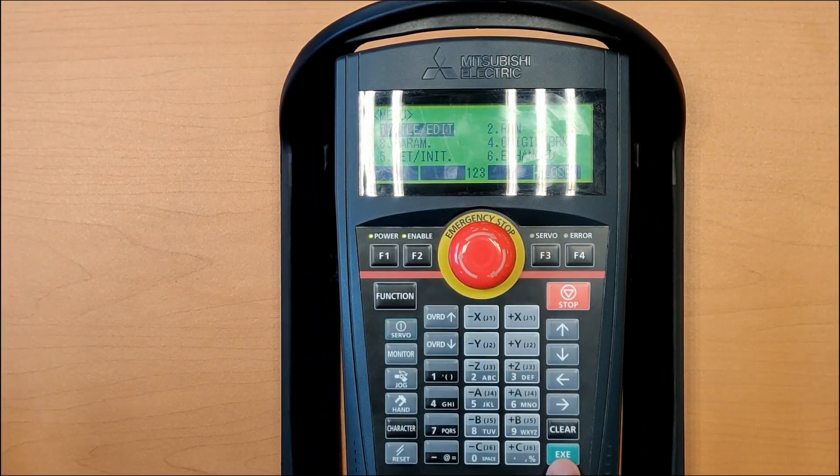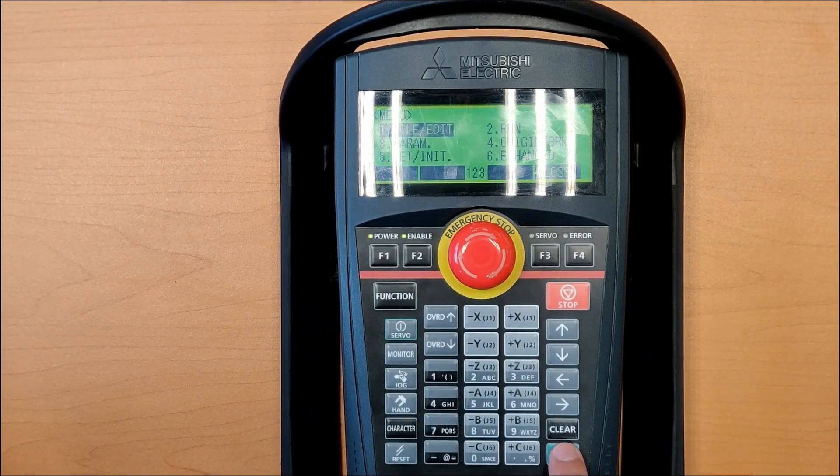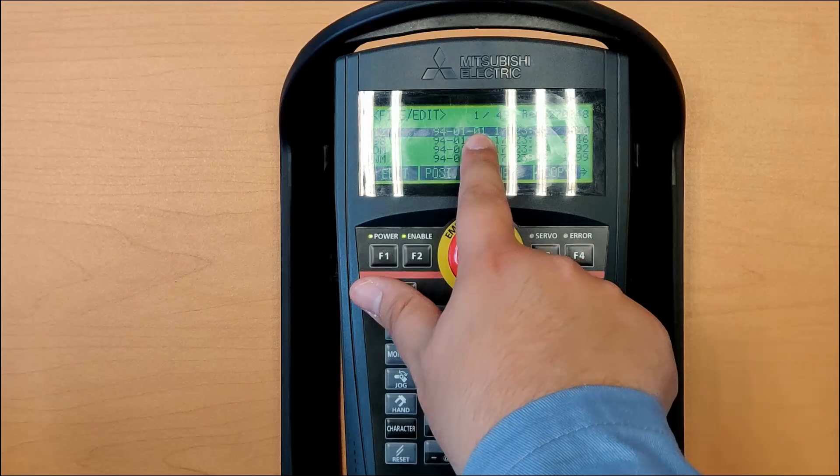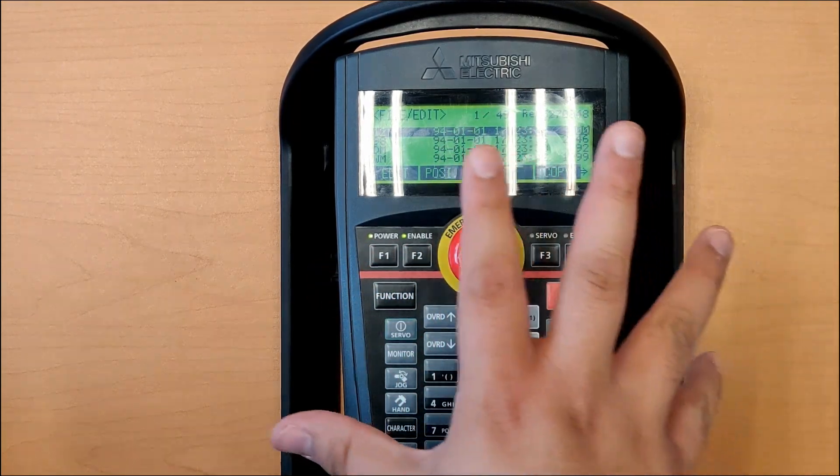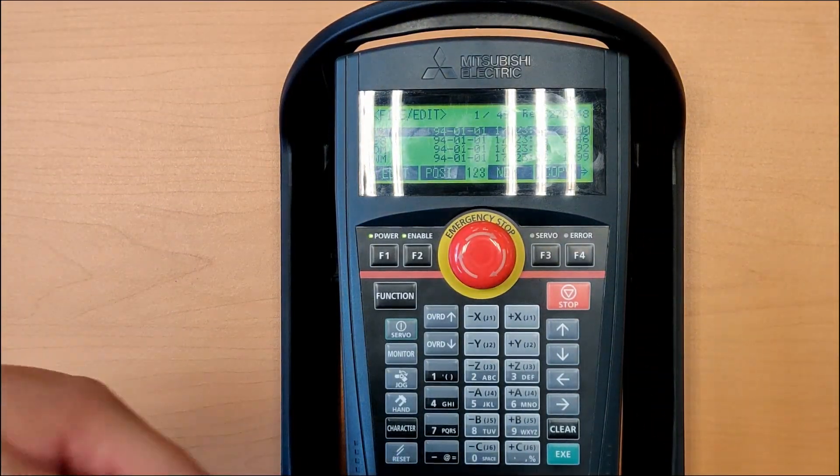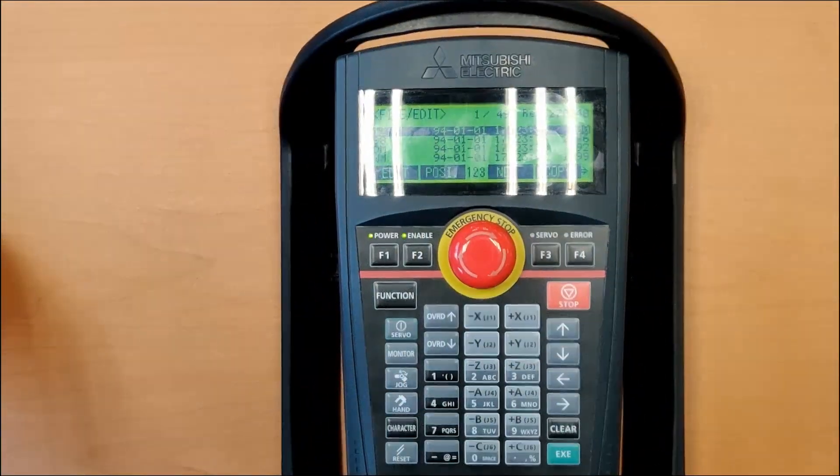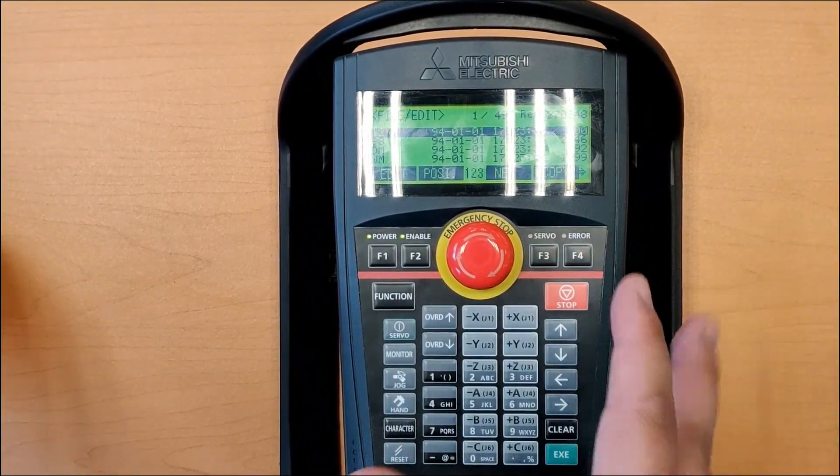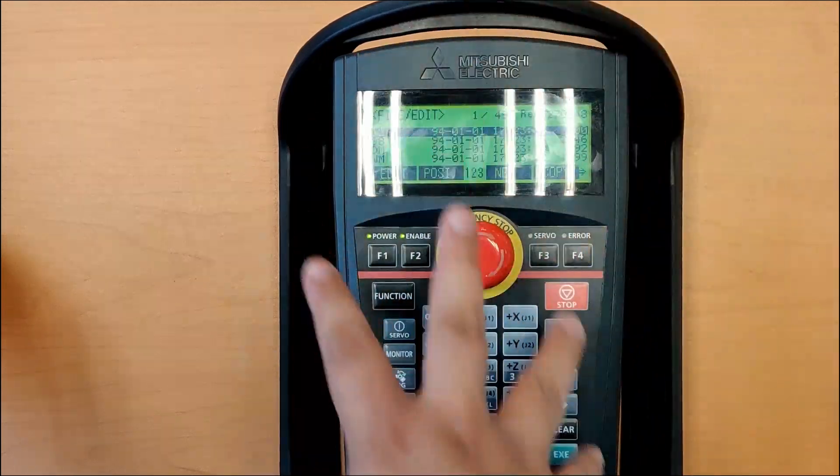Once we enter this menu by pressing EXCE, we can go to the first menu, File and Edit, and here we will get the list of all the programs at the controller. Remember that this is the control, and the controller is the CPU. The CPU is the one who processes the information, and the control or the TeachPendant or the terminal will be the one who controls the robot in manual mode.